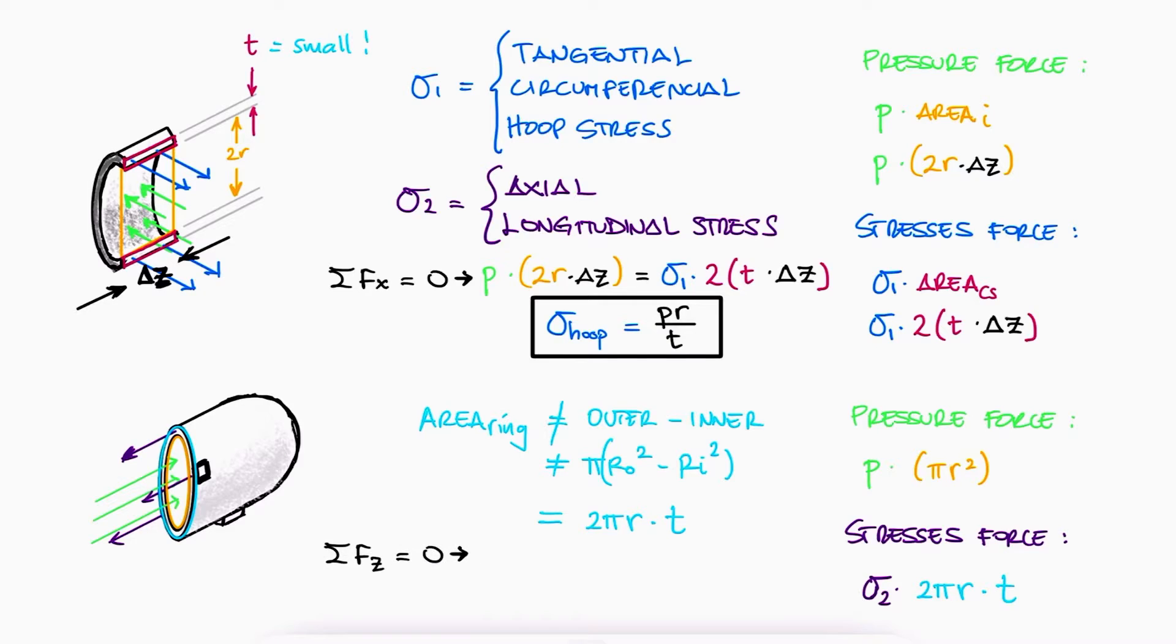And again, since the sum of forces is zero, because the vessel is not accelerating, sigma2, or the longitudinal stress, is pr over 2t.